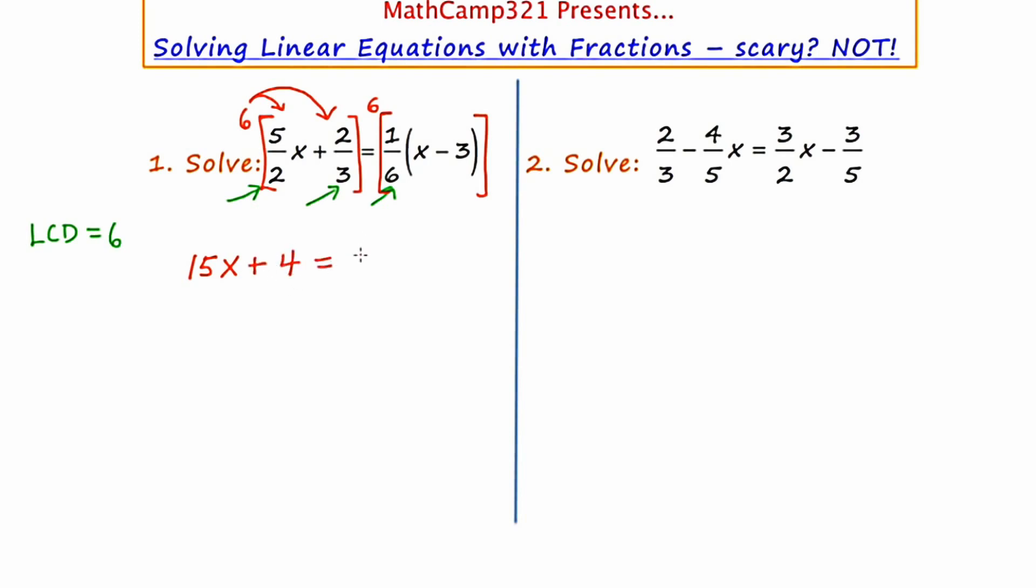Now on the right-hand side, I'm going to multiply six times one sixth. Now all these things are being multiplied together, so I'm not going to use the distributive property. It's the six times one sixth times the expression x minus three. So six times one sixth is just six sixths or one. So I'm really just left with x minus three.